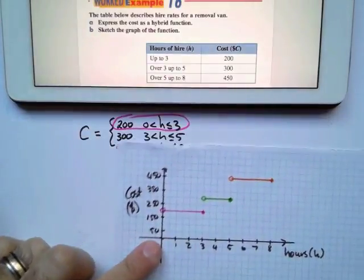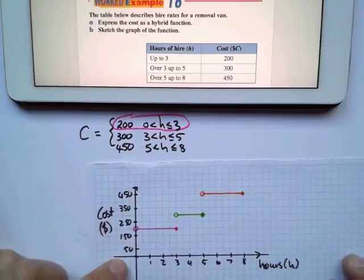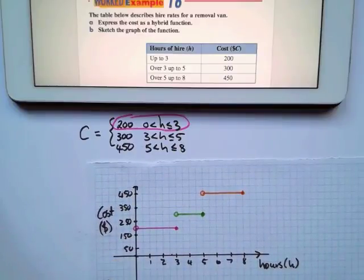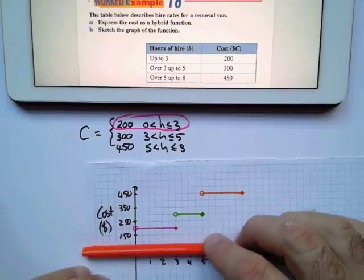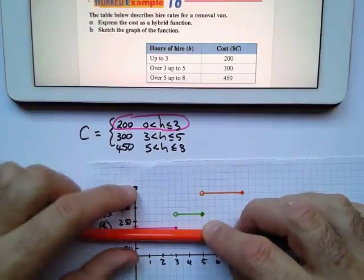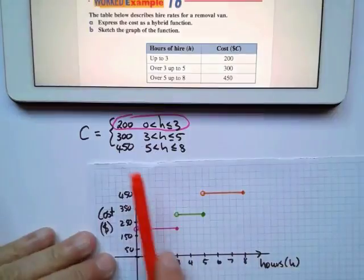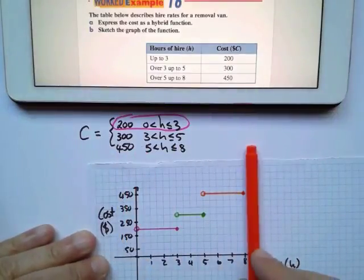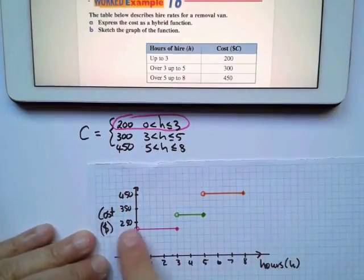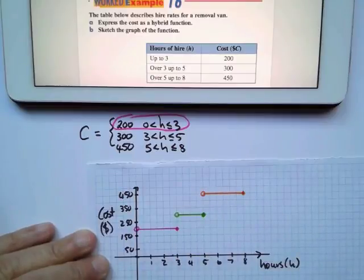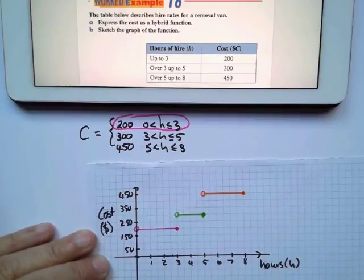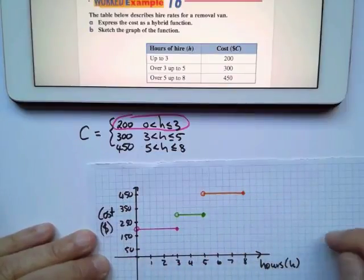And that will be the graph of that function. They didn't ask us what is our range. If they've asked us what is our range, that's the Y values, it will be between 200 and 450. What was our domain? The domain will be from zero all the way to 8 hours. Can you see that this is a discontinuous graph? This is not continuous. This is a discrete graph because it's not a continuous line.